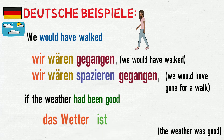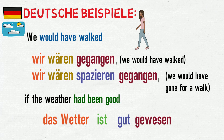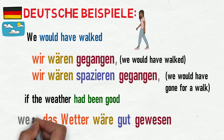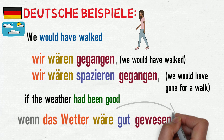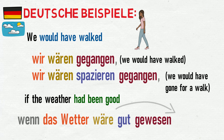To say 'the weather would have been good', therefore, is: Das Wetter wäre gut gewesen. Finally, as we start the clause with wenn, we need to boot the verb wäre to the end of the clause. So the second clause is: wenn das Wetter gut gewesen wäre — if the weather had been good.